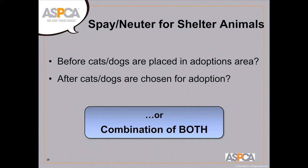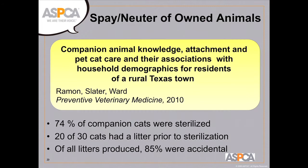Shelters often face the decision of whether to spay-neuter animals before placing them in adoption areas so adopters can take them home same day, or place animals in adoption areas first and have adopters wait a day or two. Successful shelters often do a combination — animals likely to be adopted quickly are already spayed and neutered, while for others, a certain number of surgery slots are pre-reserved so they can be quickly accommodated as they get adopted.